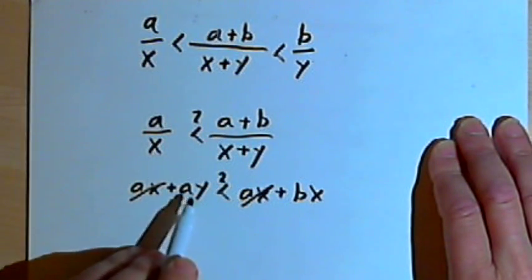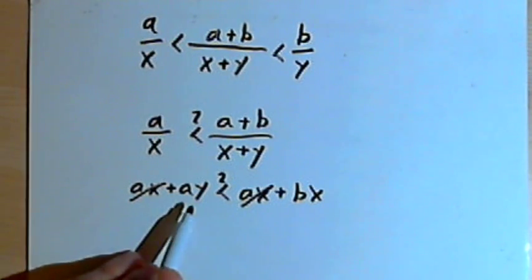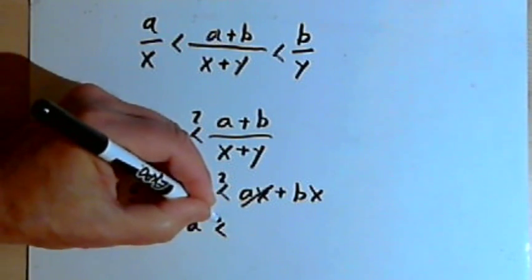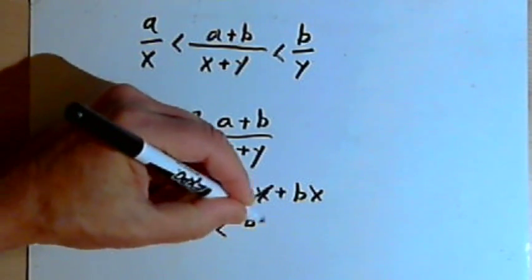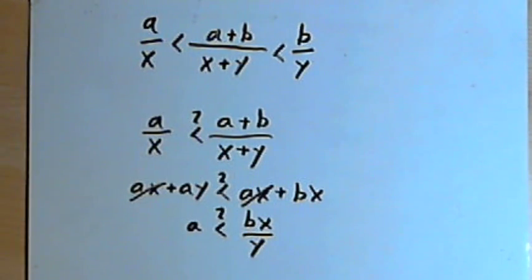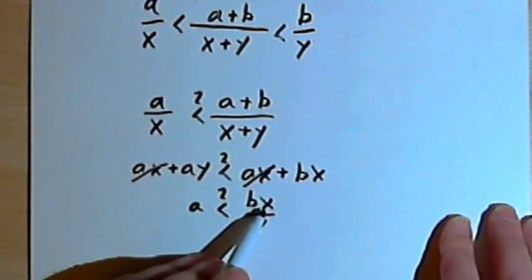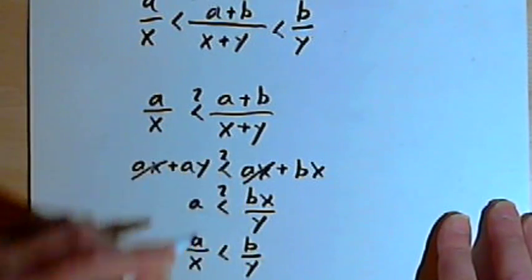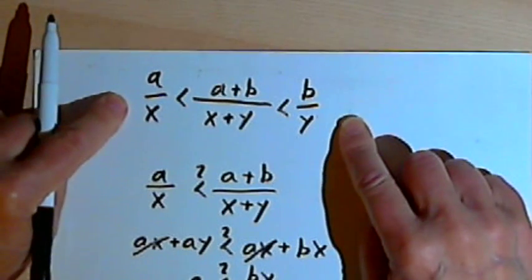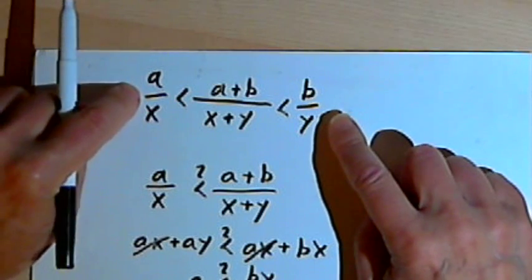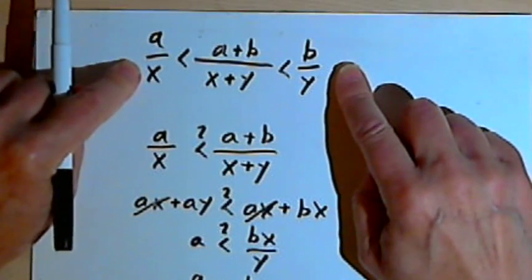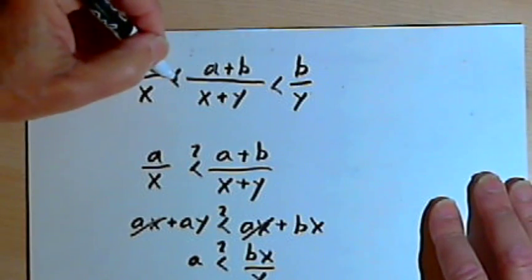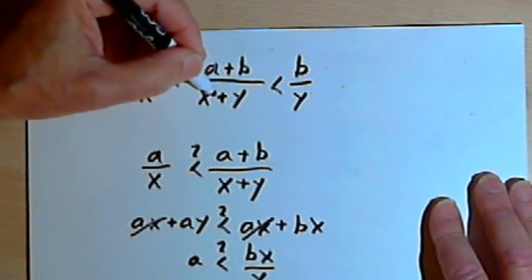Now the question is: is ay less than bx? I'll divide both sides by y to get a, and we want to see if that's less than bx over y. Then I'll divide both sides by x and that gives me a over x is less than b over y — and I know that's true because that's the fact I began with. I began by saying a over x is less than b over y. So I've shown the proof for the first part: a over x is always going to be less than a plus b over x plus y.